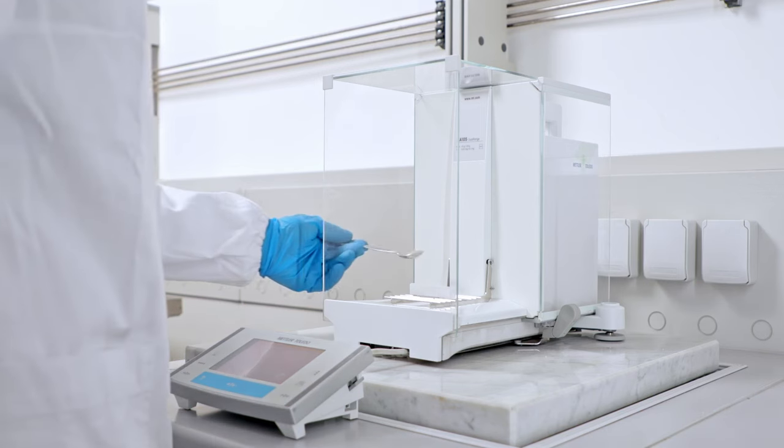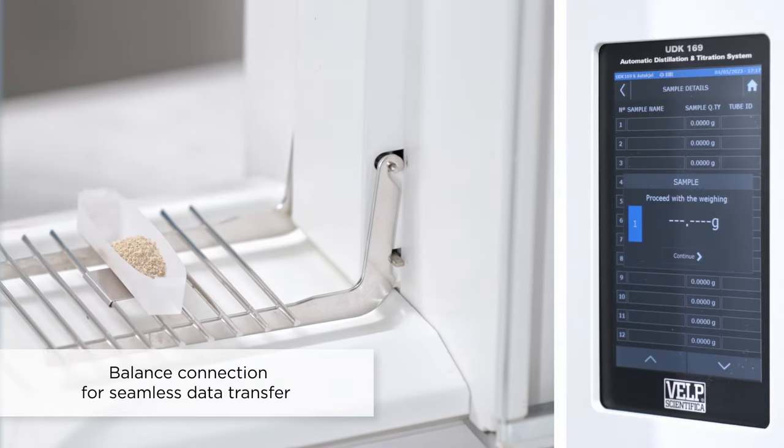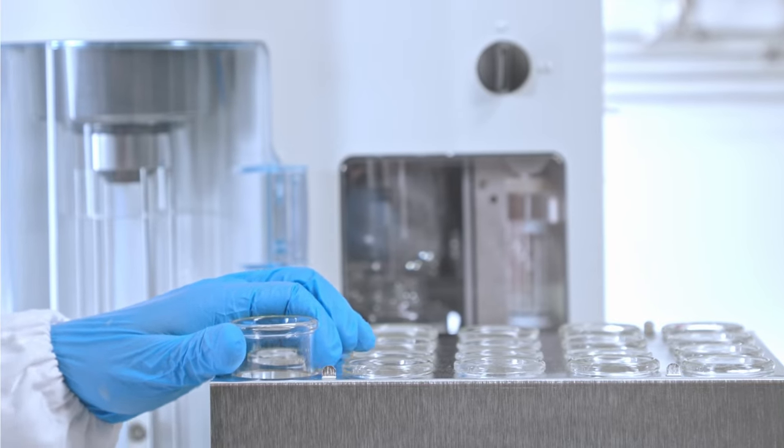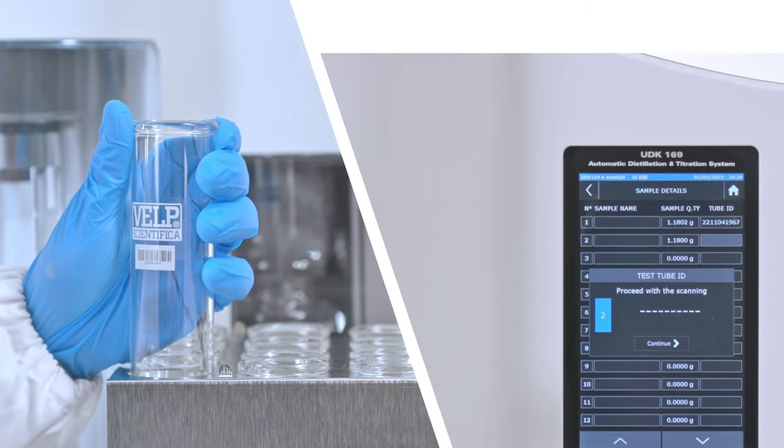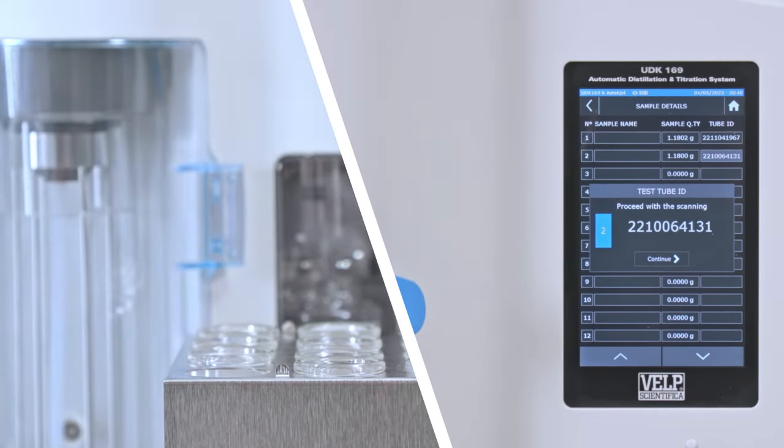To start the analysis, homogenize the sample and transfer it into a VELP test tube, connect the UDK169 to a balance for seamless data transfer. The optional barcode reader simplifies data management and speeds up the analysis preparation, avoiding transcription errors.